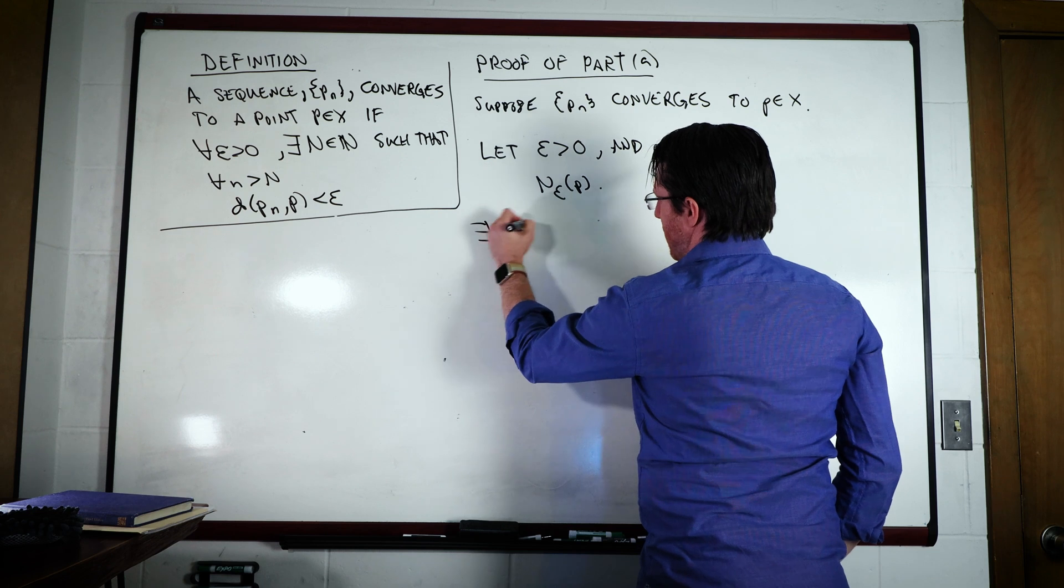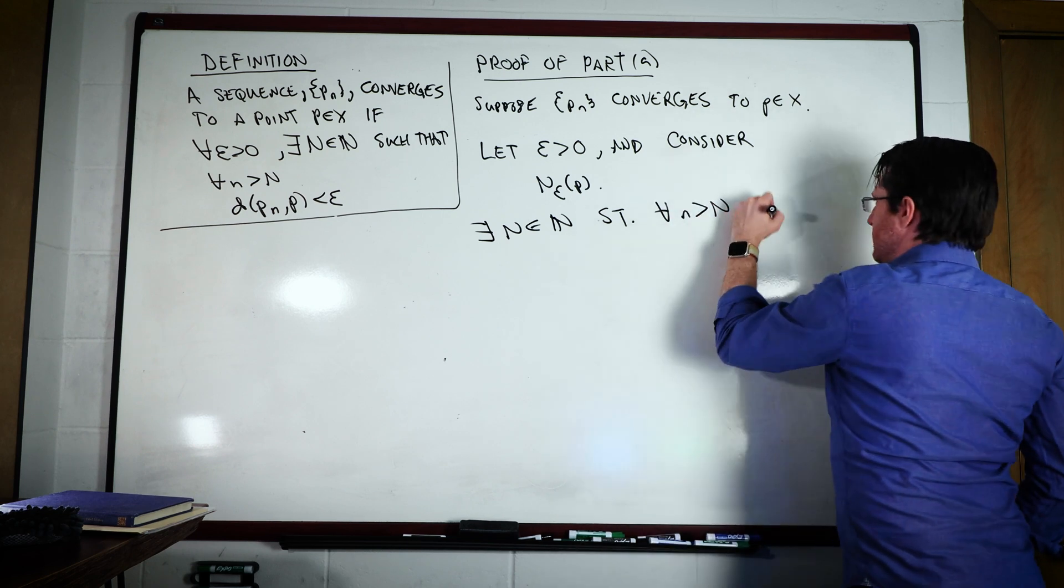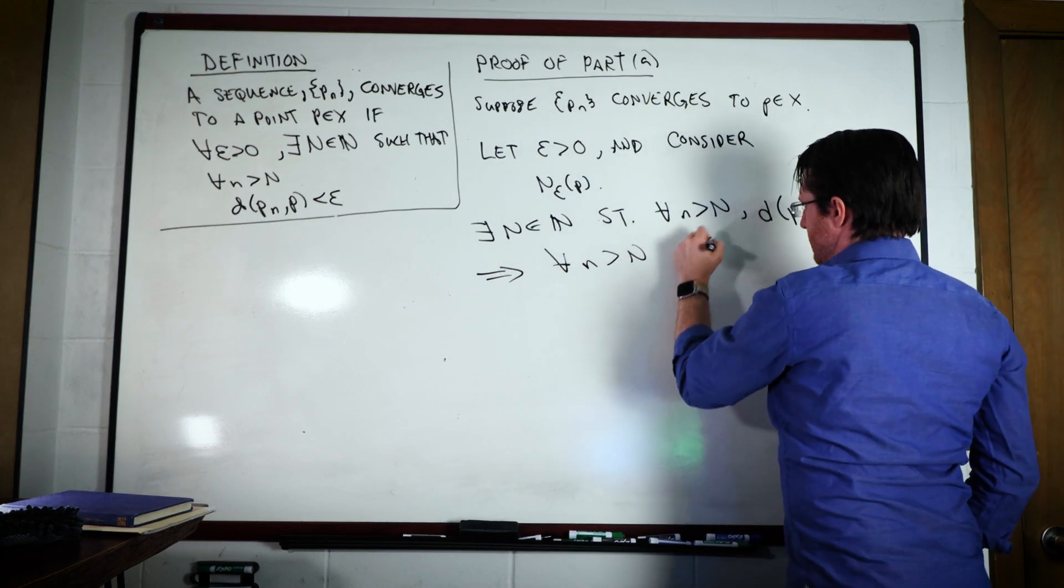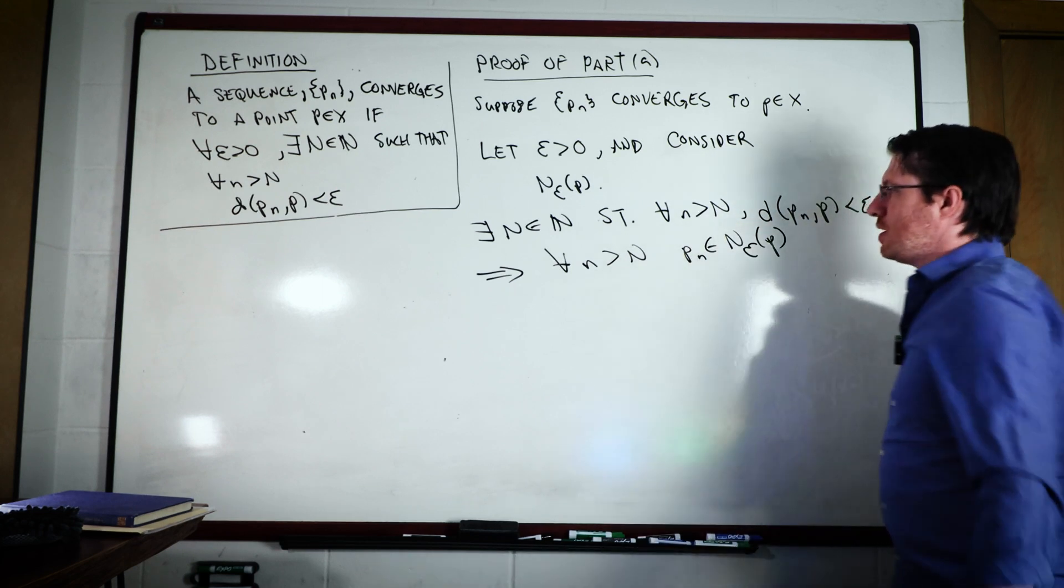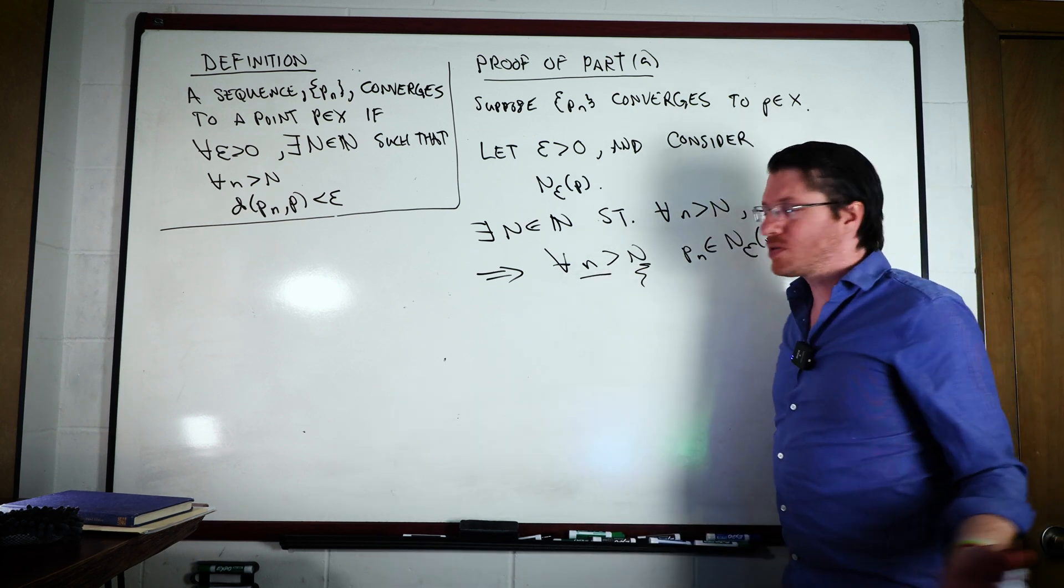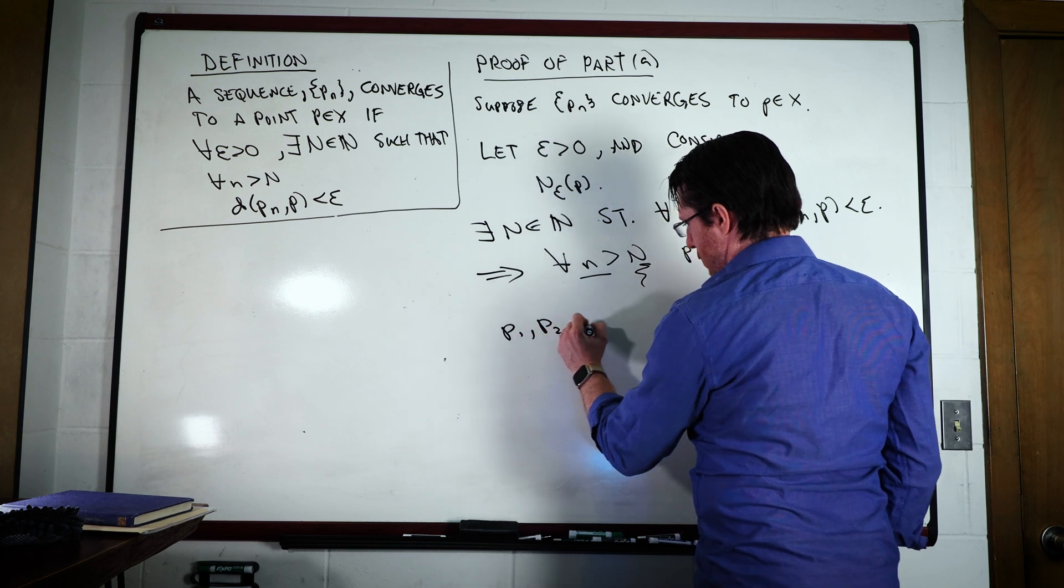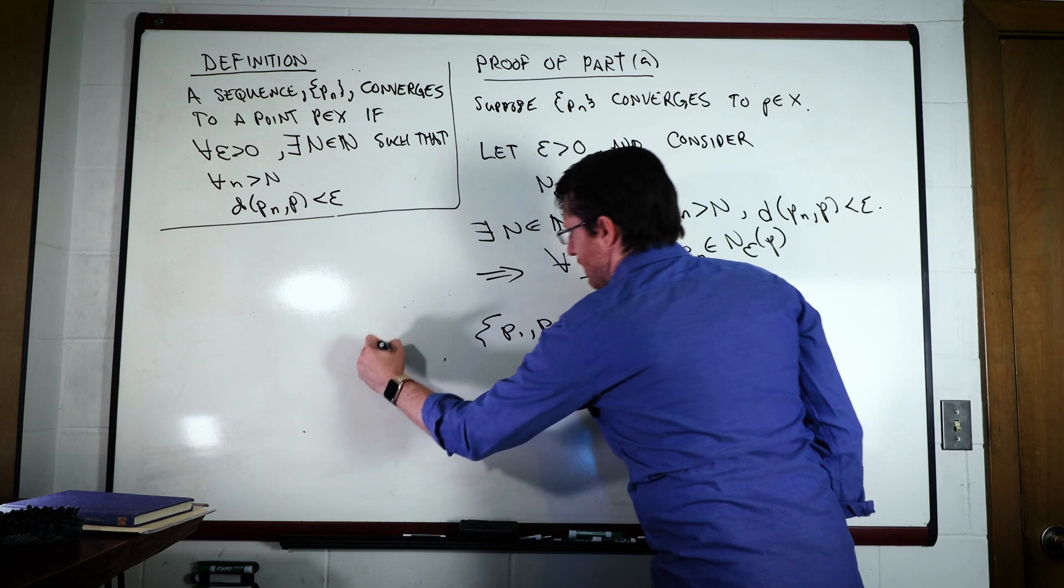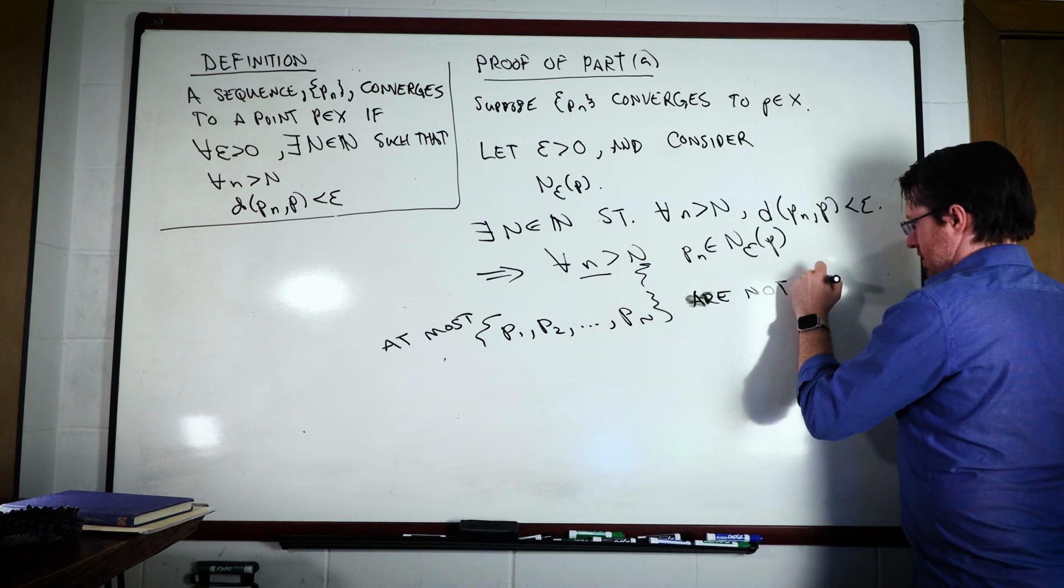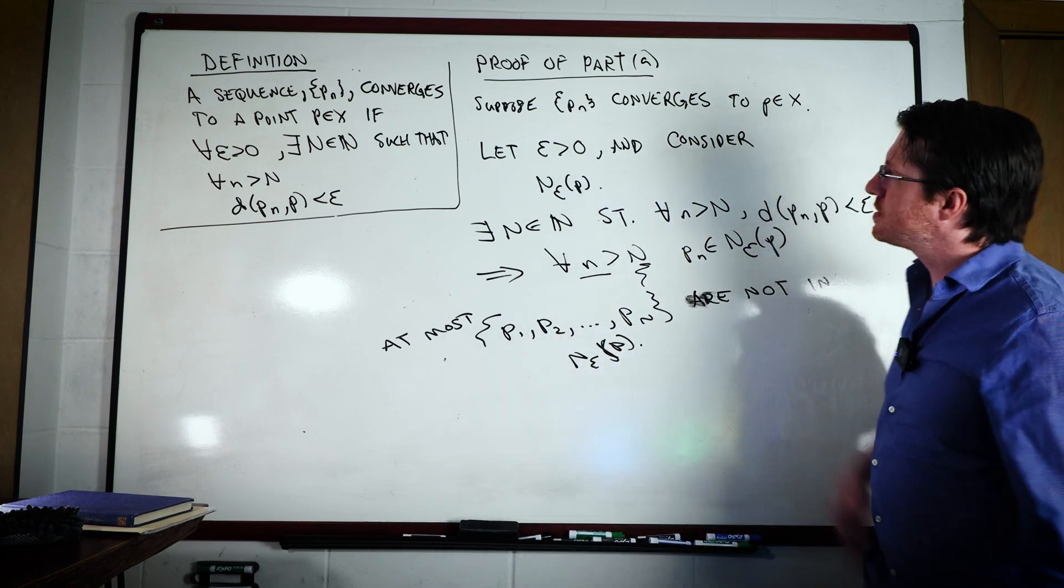So there exists some capital N such that for all n greater than N, we have that the distance between PN and P is less than epsilon, which means that PN is inside the neighborhood of epsilon about P. Okay, but then that's true for this infinite number of n's that are larger than N. It's where the finite ones, well, it turns out that if we take a look at P1 through P2 up to PN, we can say that at most, these elements are not in N epsilon of P. And that's finite. So there we go. That is that direction of part A.